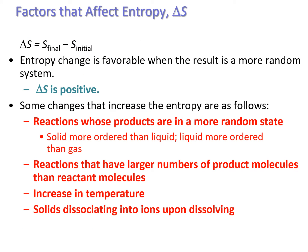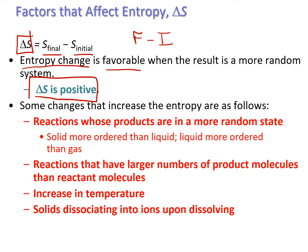Entropy is a state function. We can calculate the overall entropy change by looking at the final entropy minus the initial entropy — delta S equals S final minus S initial. Delta S is favorable when the result is a more random system, meaning more possibilities, more randomness. That is when delta S is positive, meaning spontaneous.